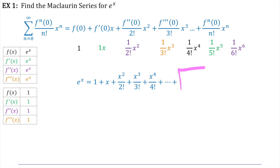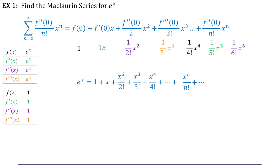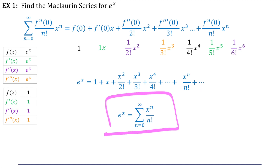But instead of going on forever, let's see if we can write this in a more concise format. We need an nth term here, and that nth term would be x to the n over n factorial. I can write this even more concisely as the sum of the series from zero to infinity of x to the n over n factorial. And this is the Maclaurin series for e to the x.